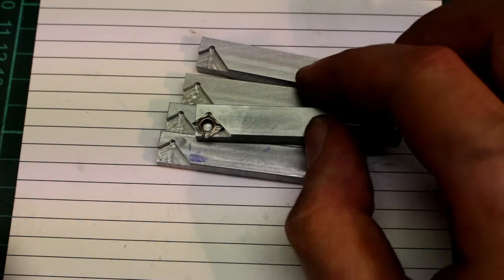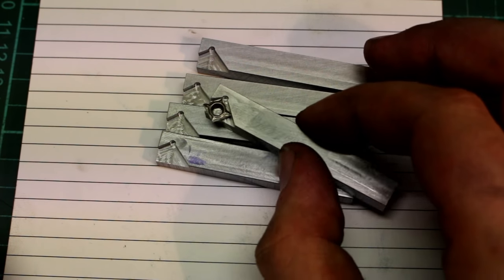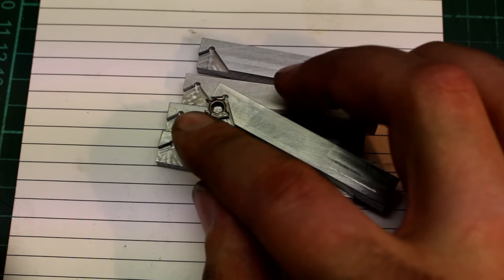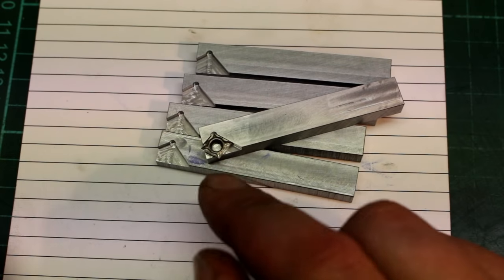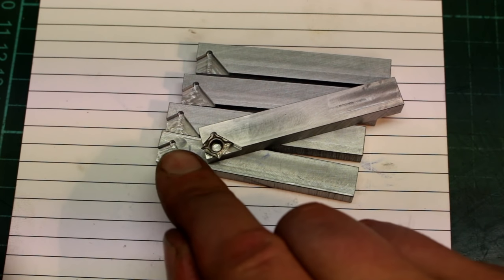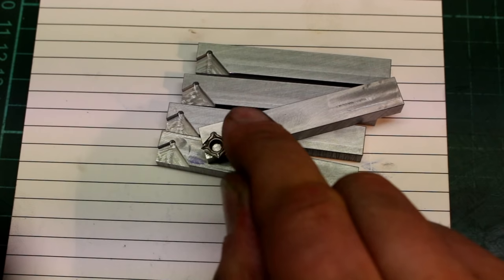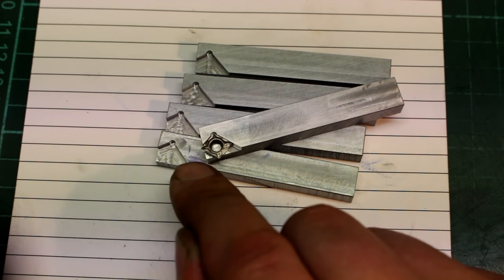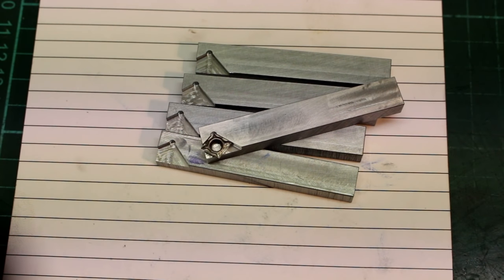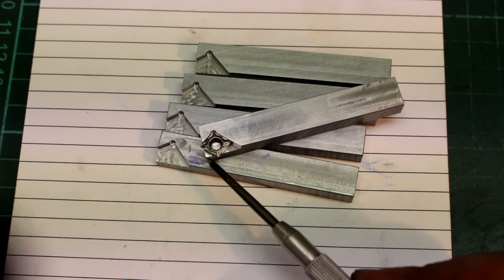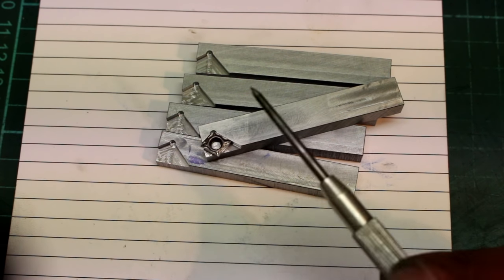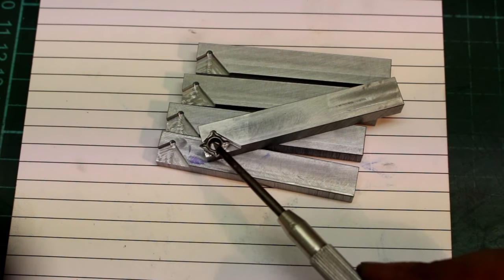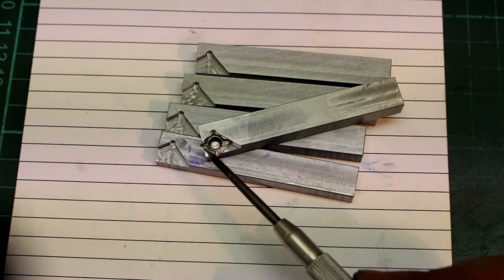Here are our five indexable tools and as you can see the CCMT0602 insert fit already into the corner and the cutting edges, the cutting corners, are already proud of the body of the tool. But we need to to cut away this corner to get access to this cutting edge so we can do chamfers with it. And we're doing this on the milling machine because it's convenient.